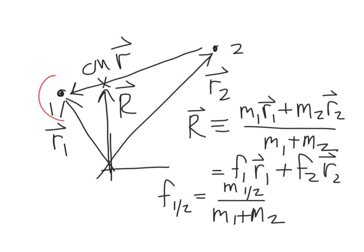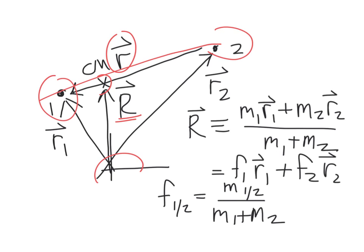Coming back to our system: here's mass one and mass two. Remember that we have a vector, little r, which points from mass two to mass one. Now we identify the center of mass for the whole system — center of mass being right here. We're going to refer to that position using capital R. All of these positions are referred to an inertial frame, which I've sketched down here. The inertial frame is arbitrary, located somewhere in space, but what's important is that it's inertial, meaning that Newton's laws apply in a simple way.